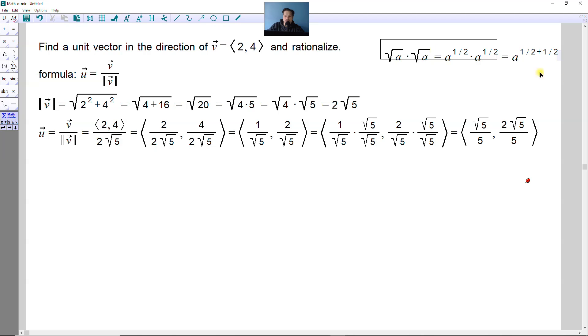Now 1 half plus 1 half is just 1. So that means this whole thing here ends up being a raised to the first, which normally we just write as a. And that's why you get the 5 on the bottom in this position, and then the 5 on the bottom in this position.